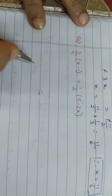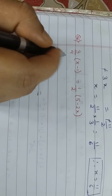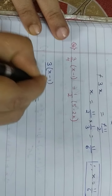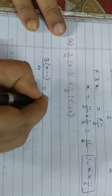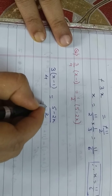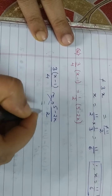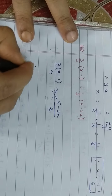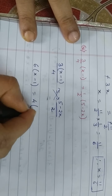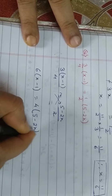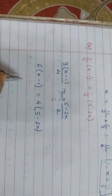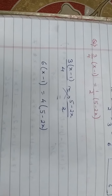Question number 6. It is the simplest one: 3(x - 1)/4 equals (5 - 2x)/2. Do the cross multiplication: 3 times 2 is 6, so 6 into (x - 1) equals 4 into (5 - 2x). Now open the bracket — this is similar to our previous question, so you have to complete this one yourself.